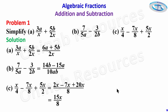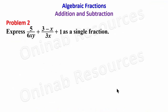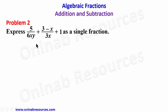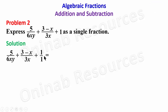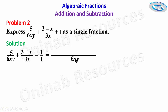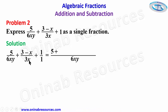That is the end of the solution to problem 1c, so we are done with problem 1. We then go to problem 2. For problem 2 we have to express 5 over 6xy plus (3 minus x) over 3x as a single fraction. This is going to be addition of algebraic fractions. In our solution we are going to find the LCM of 6xy and 3x, which gives us 6xy. 6xy divided by 6xy gives 1; 1 times 5 gives 5. 6xy divided by 3x gives 2y.